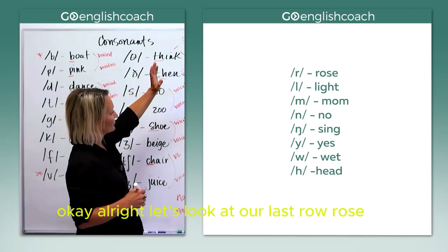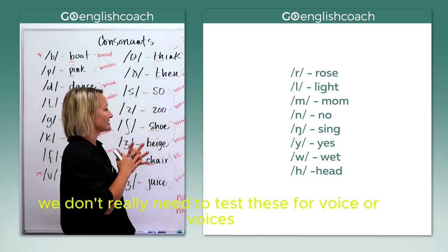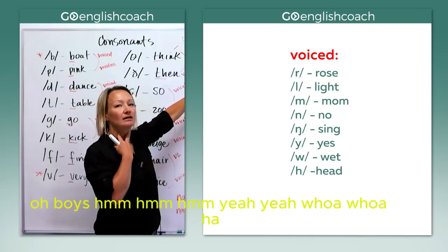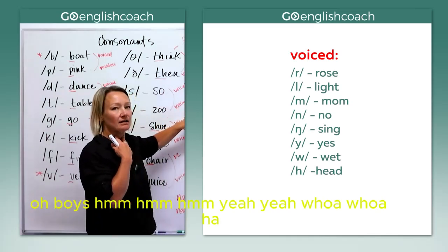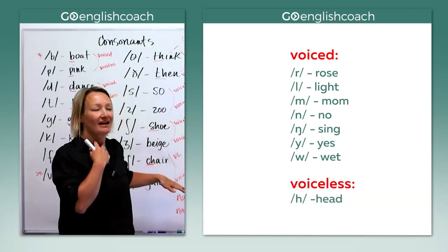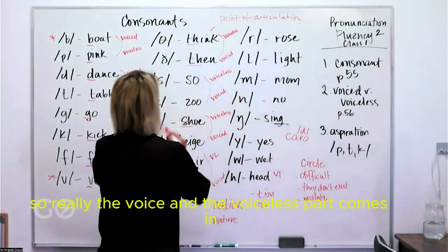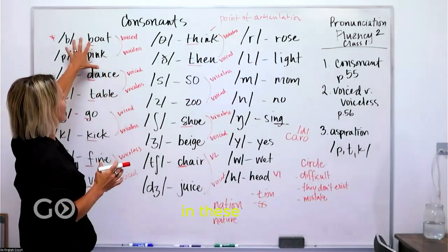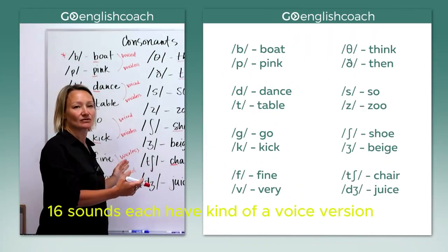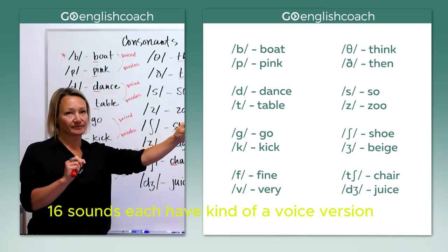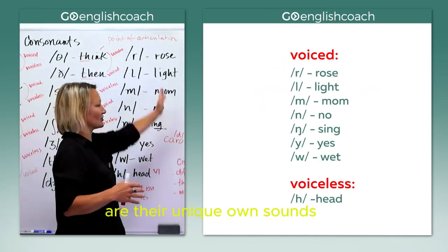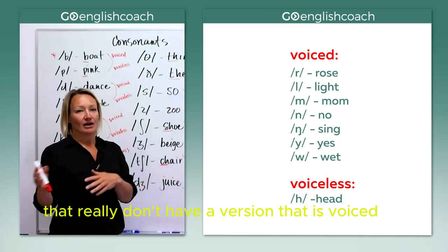Let's look at our last row. We don't really need to test these for voiced or voiceless because we don't have a voiceless R — it's always voiced. L — voiced. Mm — voiced. Y, W — voiced. H — actually this one is voiceless. So really the voiced and voiceless distinction comes in these eight pairs — those 16 sounds each have a voiced or voiceless version. That's really what you need to know. These others are their own unique sounds that don't have a voiced or voiceless counterpart.